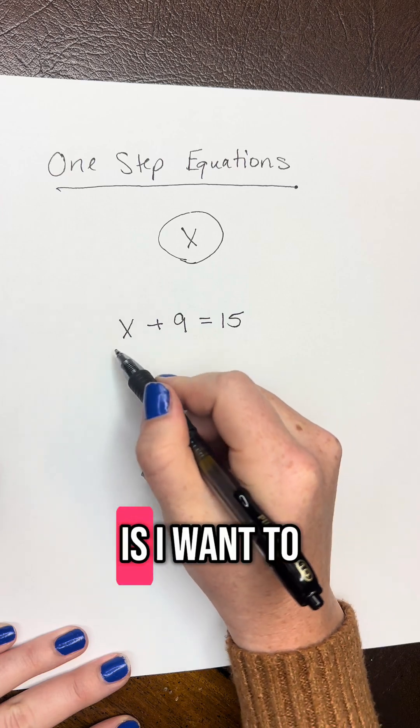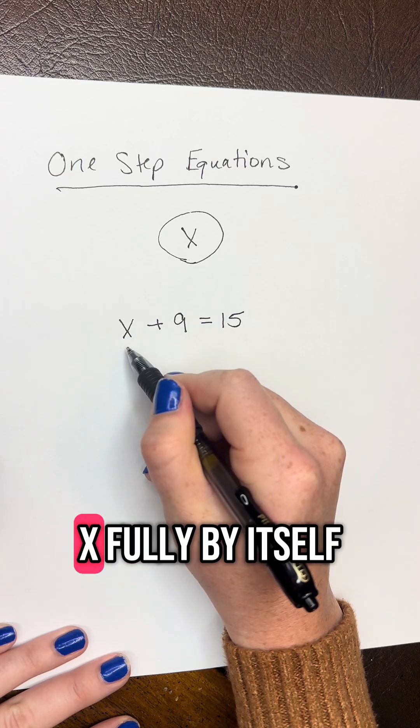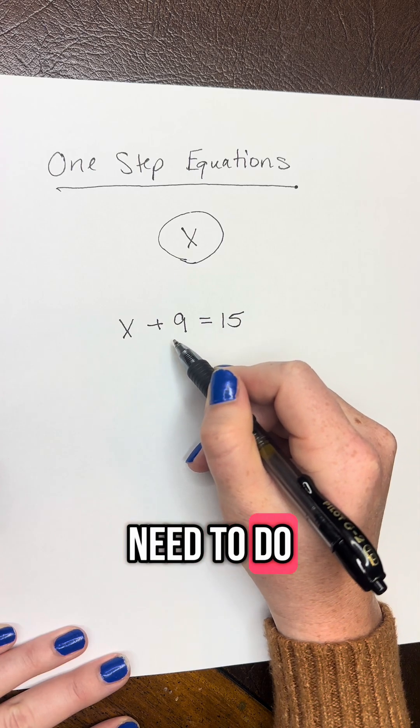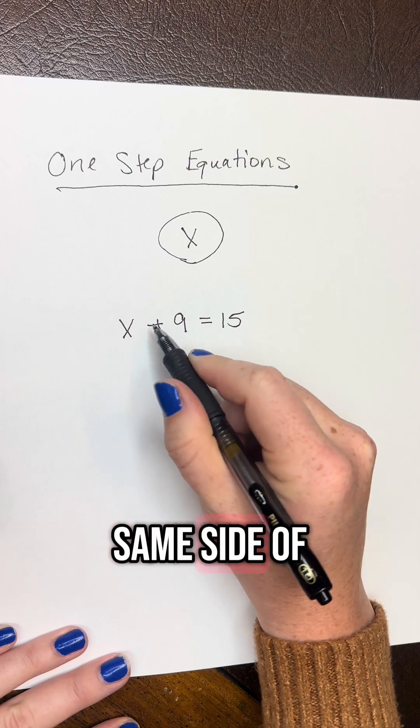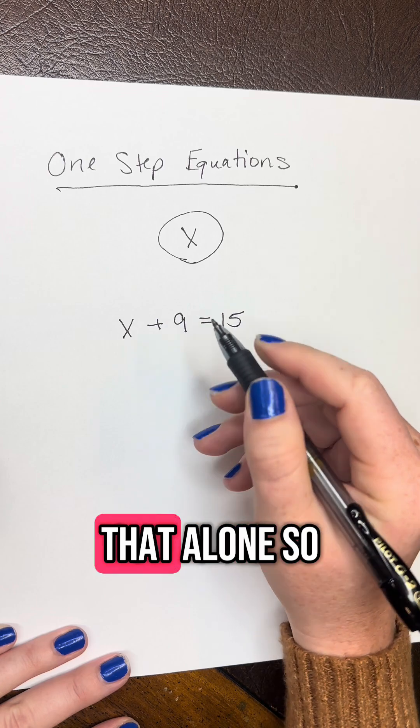Now my goal is I want to get this letter X fully by itself. So what you need to do, you need to find the other thing that's on the same side of the equation as the X, so you can get that alone.